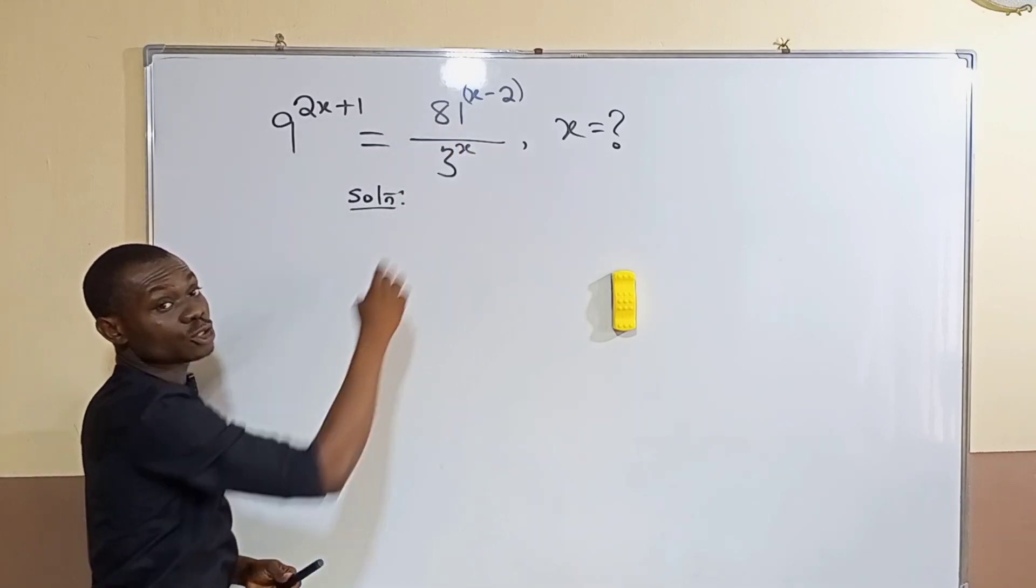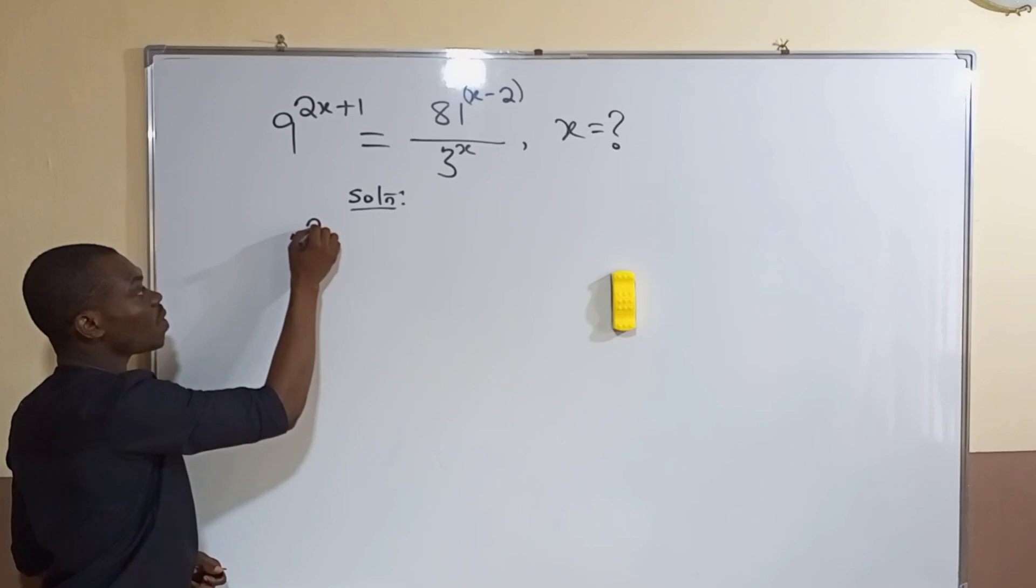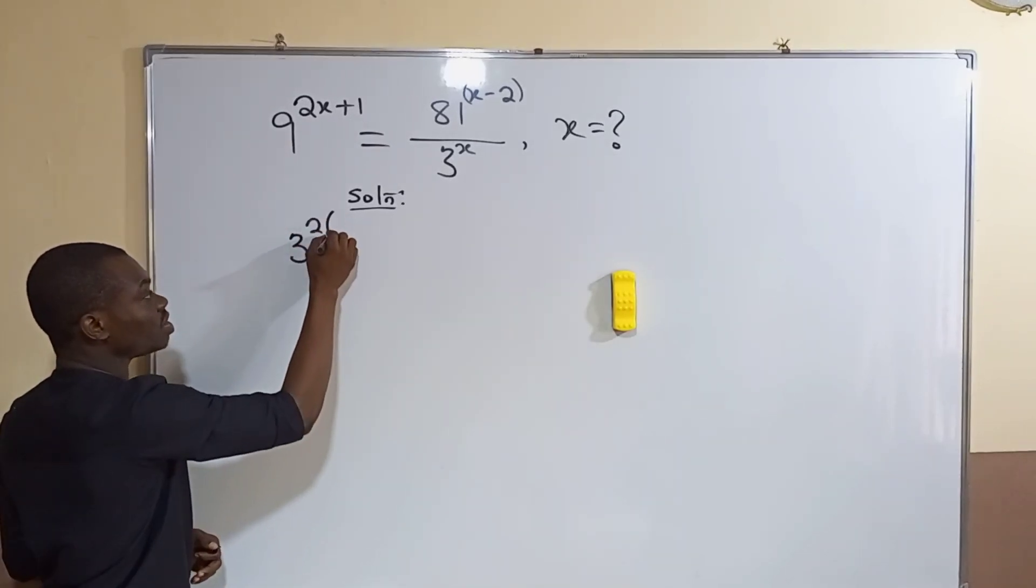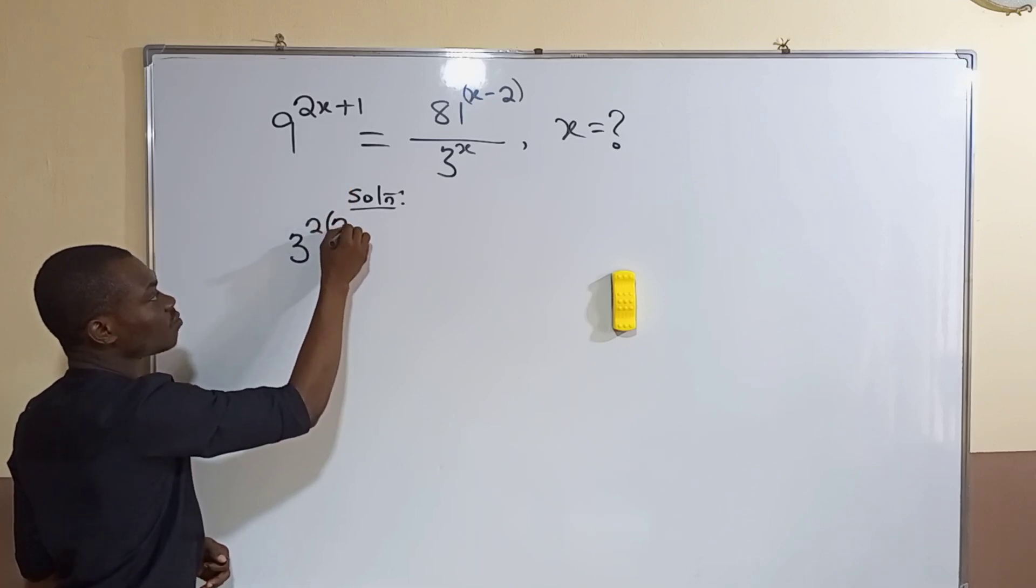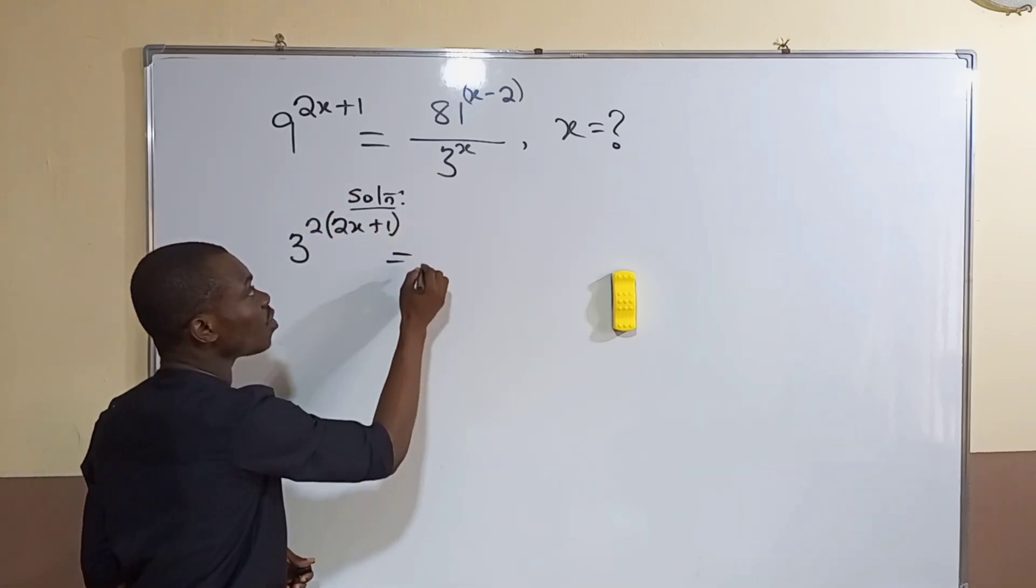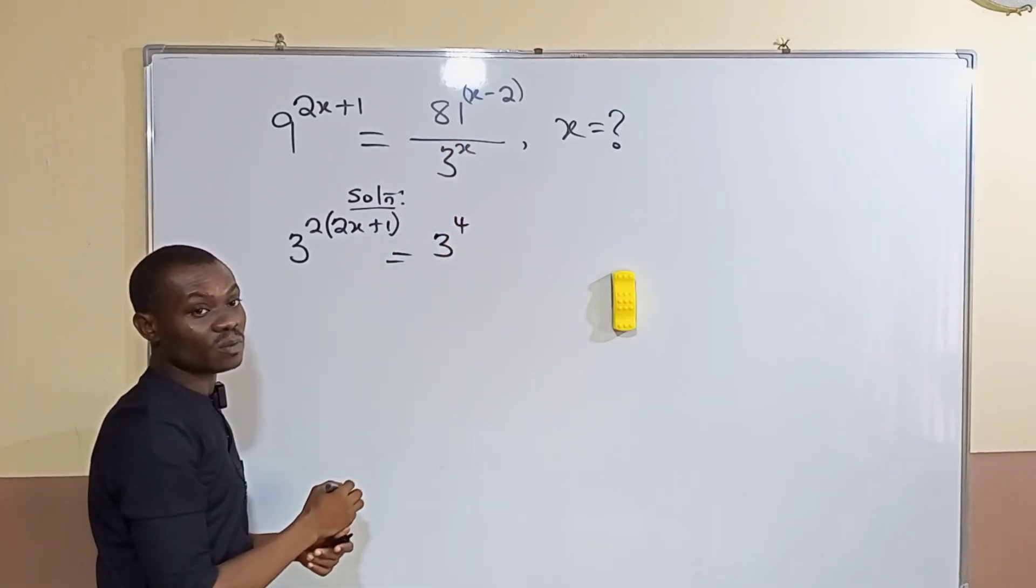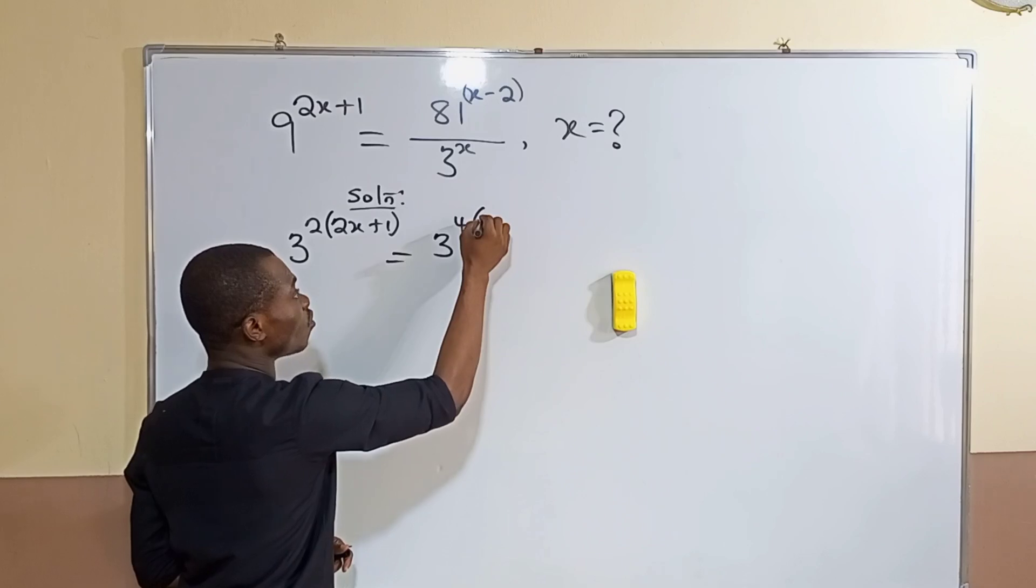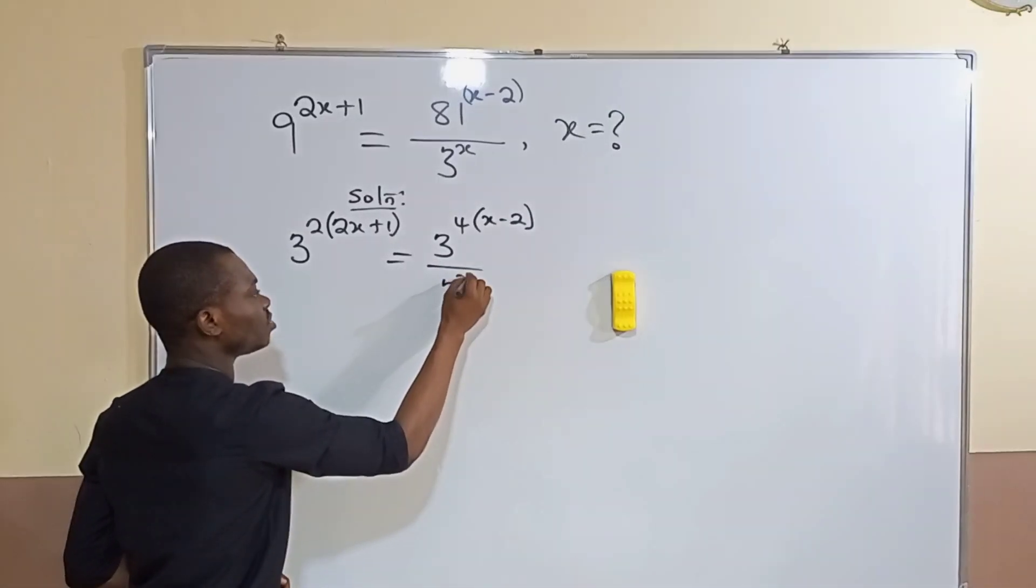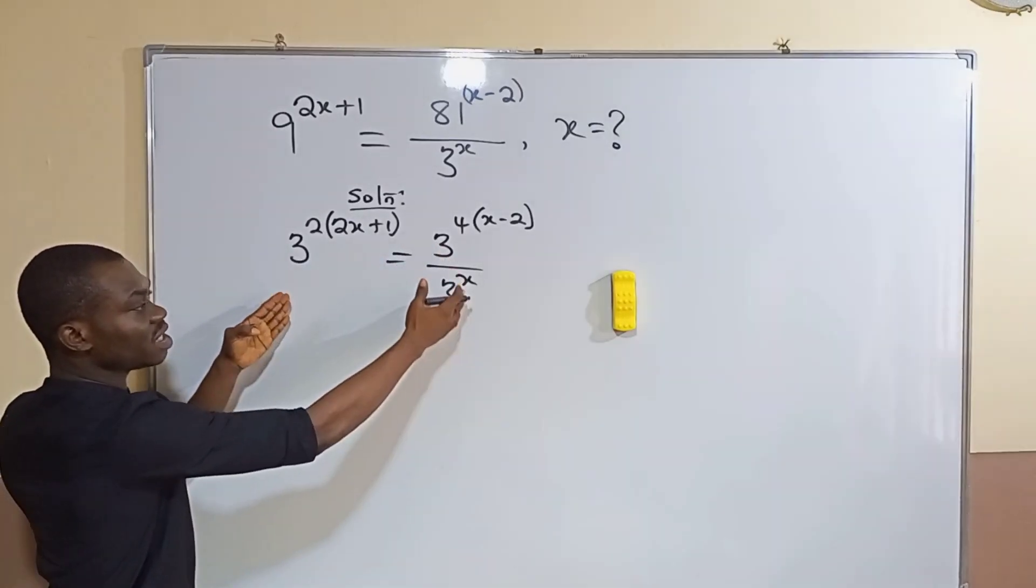What am I expected to do? I will try to reduce these other bases to be in base three. I can write nine as three raised to power two, and there's already a power existing there, so the one I am bringing up now will multiply that one. I will have 2x plus 1, and that is equal to—I'll do the same to the one up there. I know 81 is 3 raised to power 4, and that 4 will multiply x minus 2, and then that is all over 3 raised to power x.